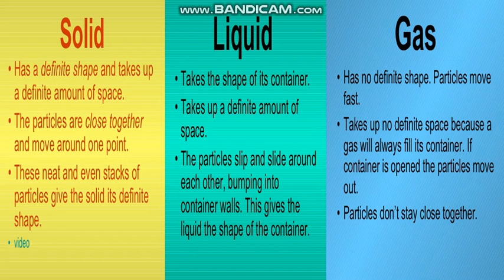The particles of liquid are not tightly packed as in solid. In solid they are tightly packed and cannot easily change their shape, but the atoms of liquid are not tightly packed — their packing is weak compared to solid. So they can easily take up the shape of the container. The particles slip and slide around each other, bumping into the container wall, which gives the liquid the shape of the container. Unlike solid where particles only move around one point, the particles of liquid slide over each other.